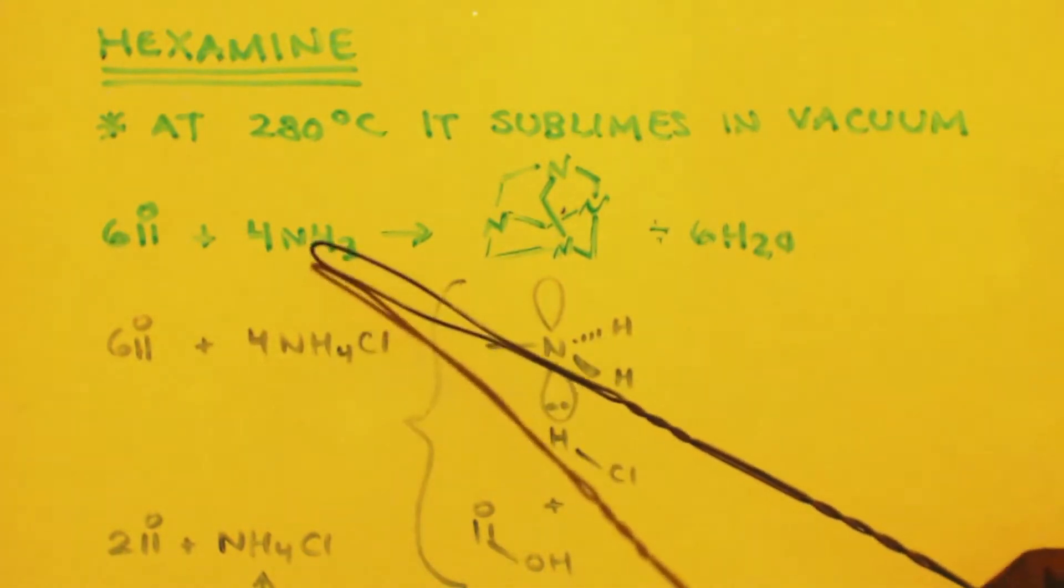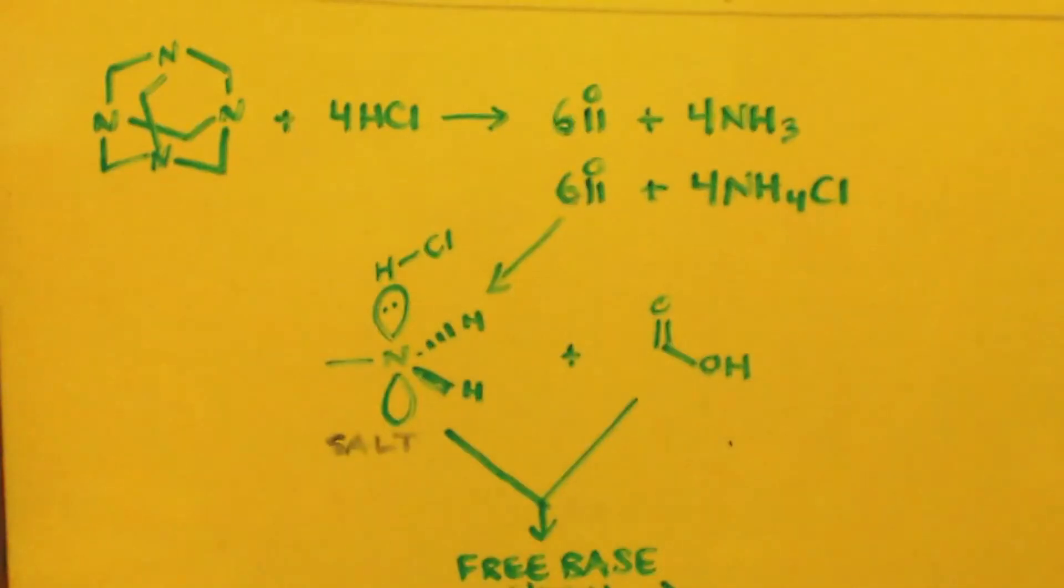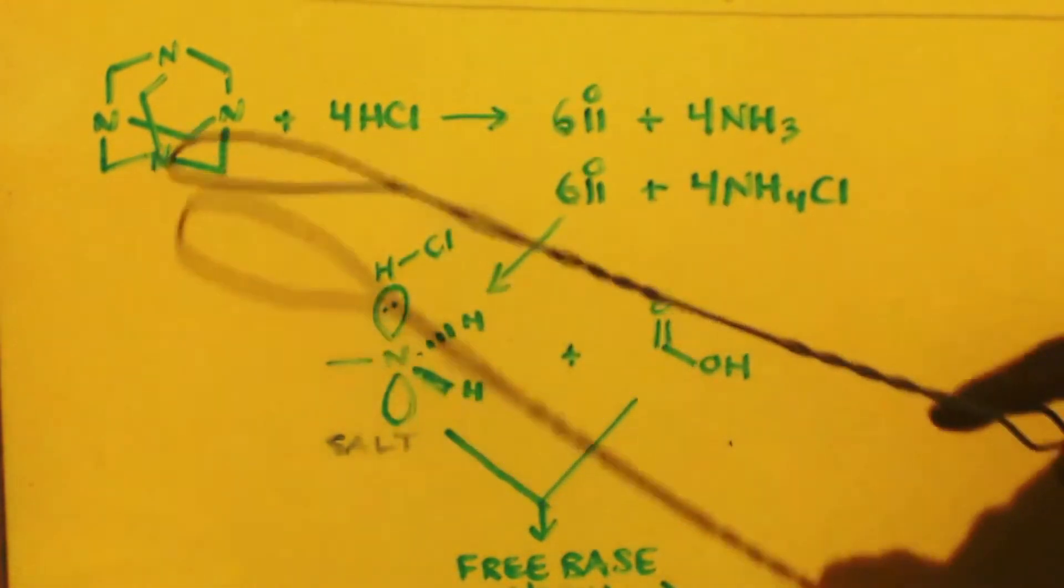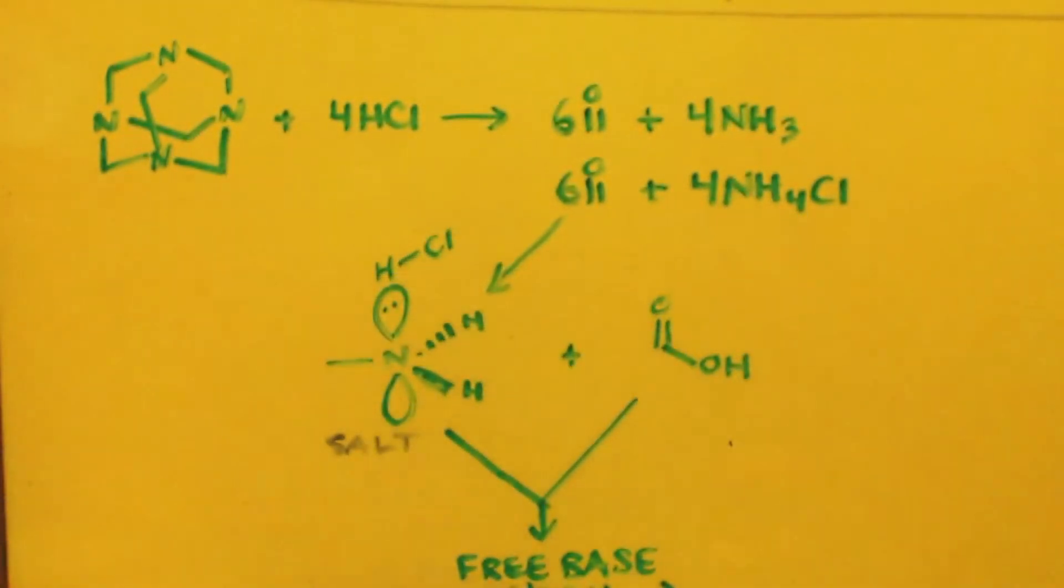I want you to compare it with this: six formaldehyde, four ammonias versus six formaldehyde, four ammonium chlorides - the chloride salt of ammonia. I don't know if this formula is correct or not, these are guesses here. But look at what happens when you take hexamine and you hydrolyze it with HCl.